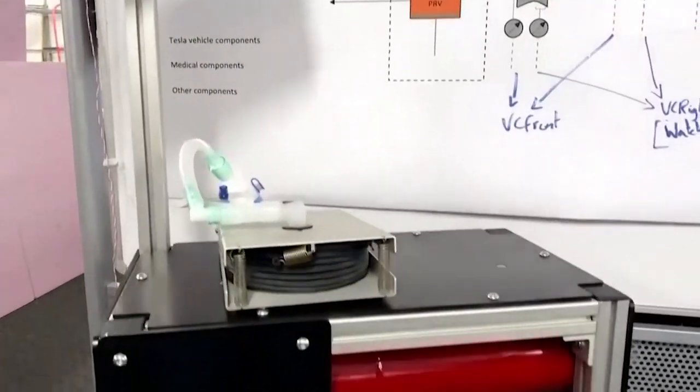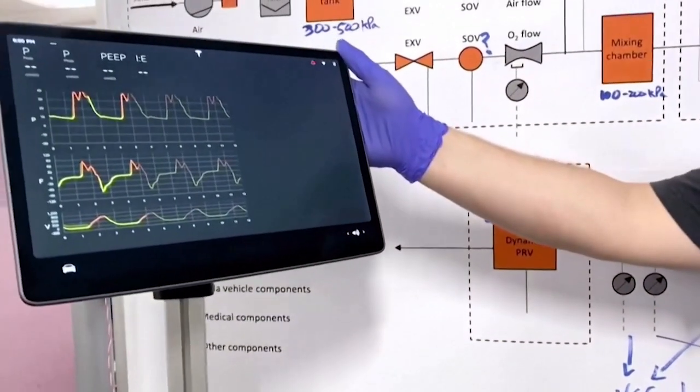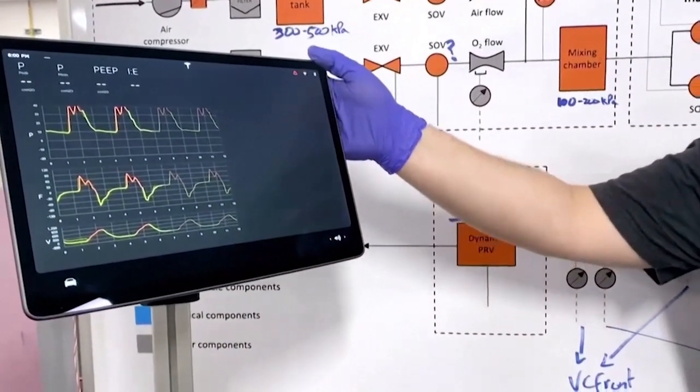This is powered by the Model 3 infotainment system, possibly a Model 3 center display. Touch screen? This touch screen is powered by the Model 3 infotainment system.